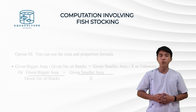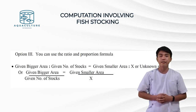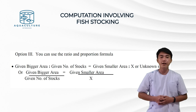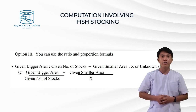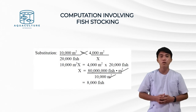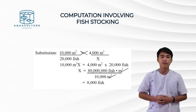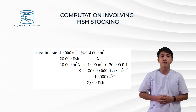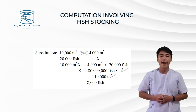Option 3 uses ratio and proportion: given bigger area over given number of stocks equals given smaller area over x. Substituting: 10,000 m² over 20,000 fish equals 4,000 m² over x. So 10,000 m² times x equals 4,000 m² times 20,000 fish. Therefore x equals 80,000,000 divided by 10,000, giving a final answer of 8,000 fish.